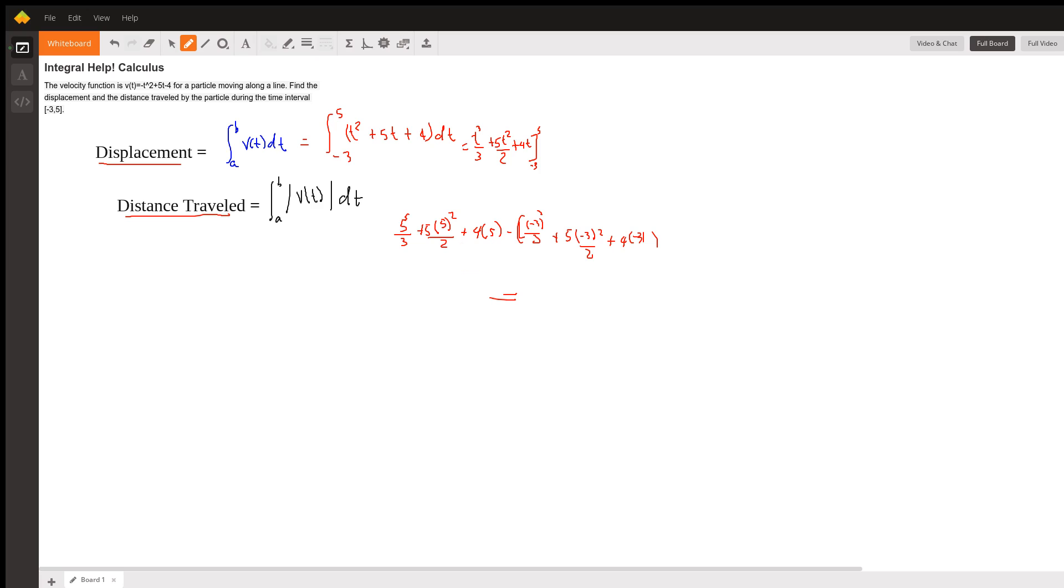Or you can go to Math 9 and do the integral from negative 3 to 5 of t squared plus 5t plus 4 dx.